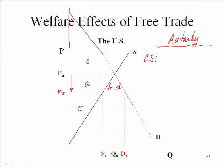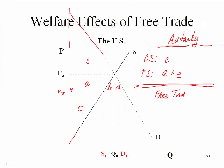In autarky, consumer surplus is just area C — above the autarky price but below the demand curve. Producer surplus is A and E — the area above the supply curve but below the autarky price. With free trade, consumer surplus now goes to A plus B plus C plus D. And producer surplus is now only E.